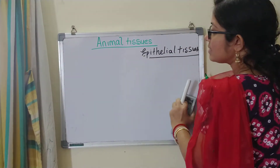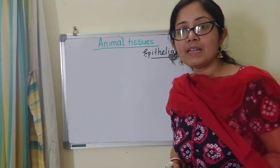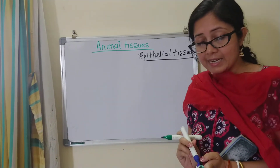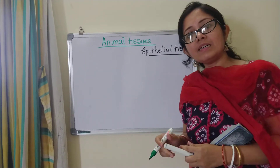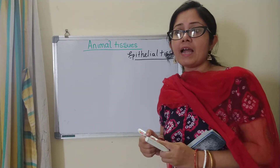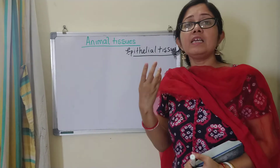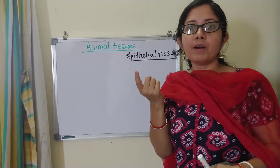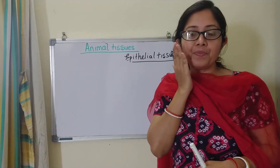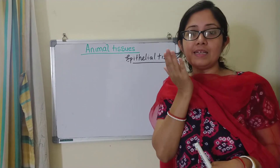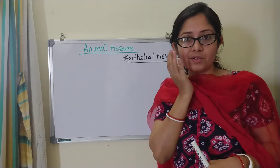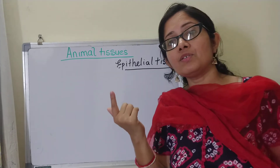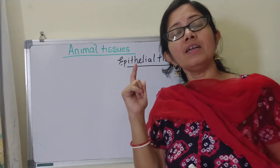The last one is the glandular epithelial tissues. As the name suggests, they are present in the glands, and glands secrete — they give out some substance. For example, the sebaceous gland in my skin gives out oil that keeps my skin moist and gives it a certain texture, and this is because of the glandular epithelium.